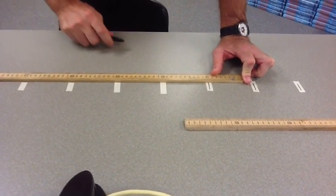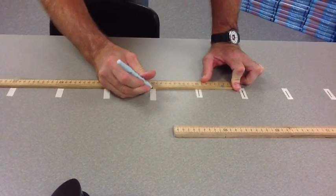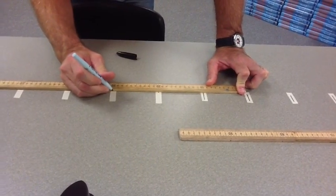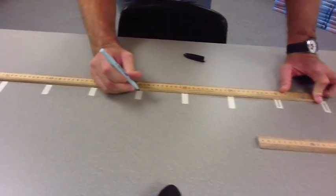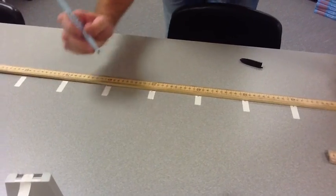It would be a good idea to draw a straight line on the masking tape. Make sure not to actually write on the table. Do not get ink on the table.